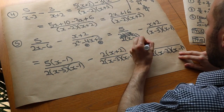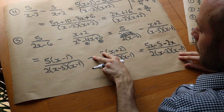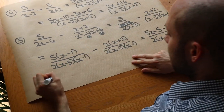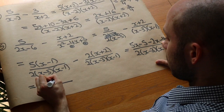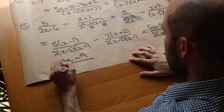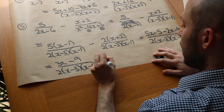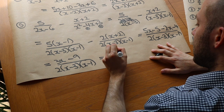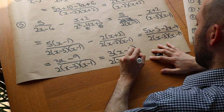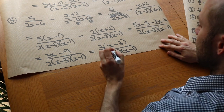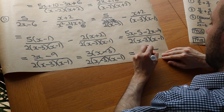Now we have a common denominator of 2(x−3)(x−1), so we can subtract. Expanding the numerator: 5(x−1) gives 5x minus 5, then minus 2(x+2) — be very careful here — gives minus 2x minus 4. Simplifying: 5x minus 2x is 3x, and minus 5 minus 4 is minus 9, so the numerator is 3x minus 9. We can factorise that as 3(x−3). Now we have 3(x−3) over 2(x−3)(x−1). The (x−3) cancels from top and bottom, leaving 3 over 2(x−1).